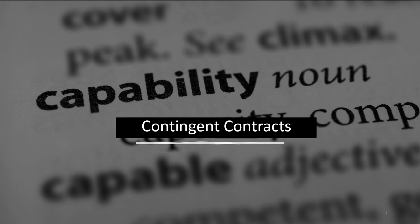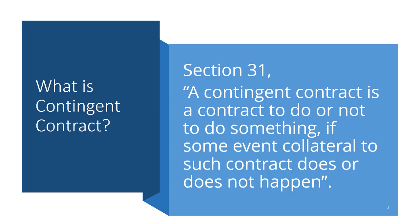What do we mean by a contingent contract and what are the different implications under Indian contract law? Section 31 defines a contingent contract as a contract to do or not to do something — meaning there is an option, and that option is dependent on some event. A contingent event is one that may or may not happen, and a contract dependent on such an event is a contingent contract.